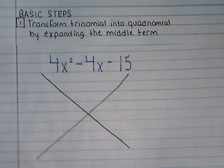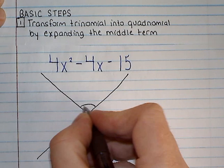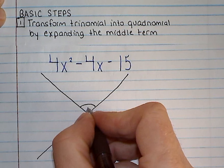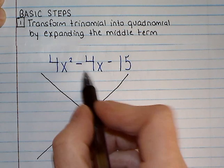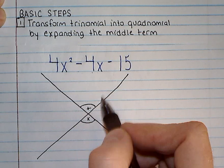As we've seen in the x-factor method, we need two terms, two factors, that are going to add to give me this negative 4 and that are going to be multiplied to give me this negative 15.